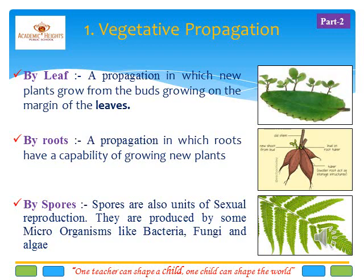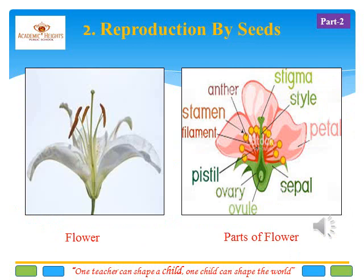Vegetative propagation can also be taken by spores. Spores are also called asexual reproduction. They are produced by bacteria, fungi, and algae. As you can see in the figure, there are small black spores on the leaf. These spores are reproductive cells capable of developing into a new individual without fusion with another reproductive cell.